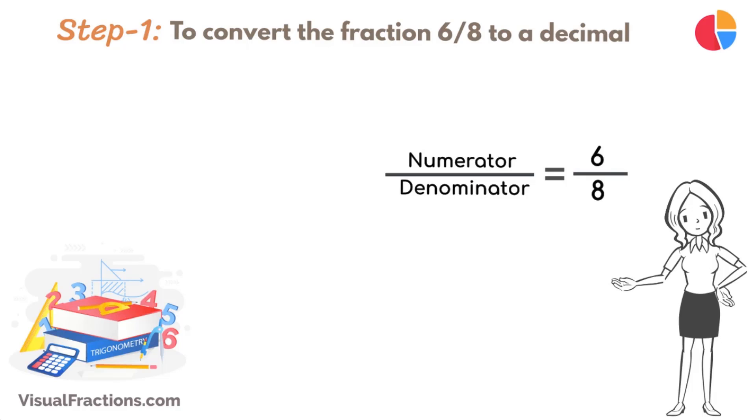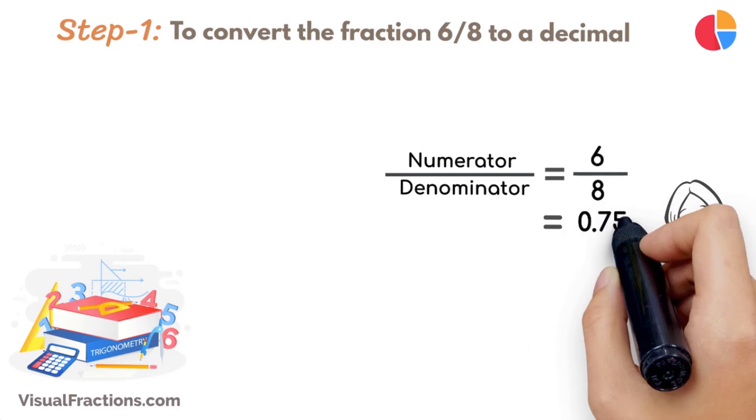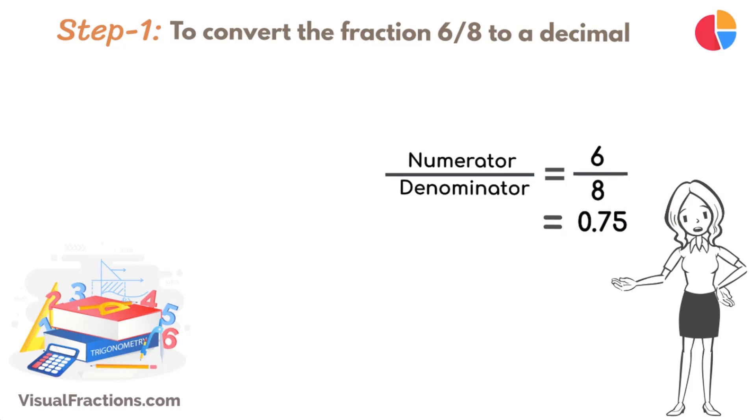Using a calculator, the answer we get is 0.75. But let's perform this division by hand using long division. Place 6 as the dividend and 8 as the divisor. Since 8 doesn't fit into 6, place a decimal point in our quotient and bring down a 0, making it 60.